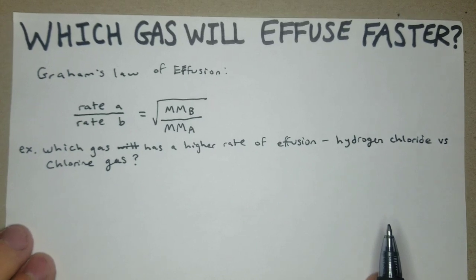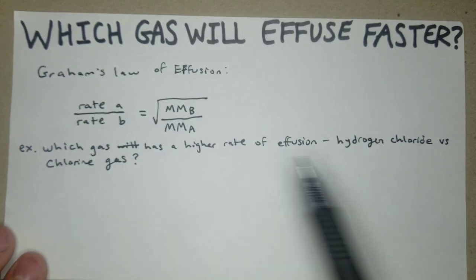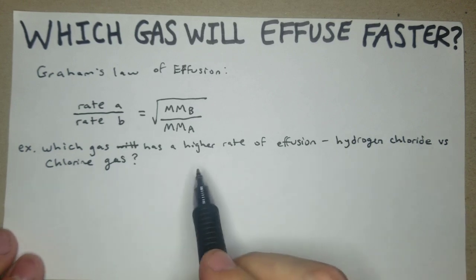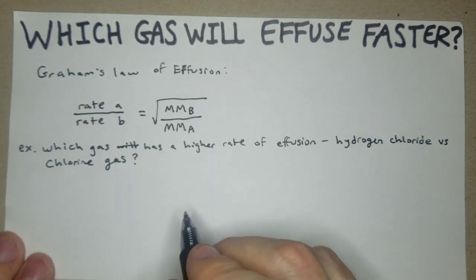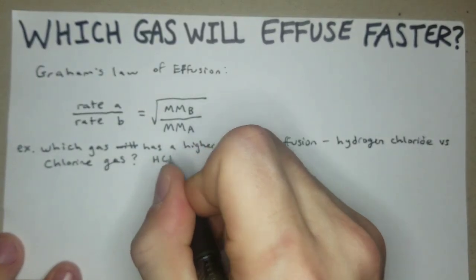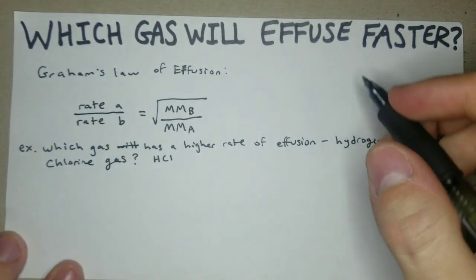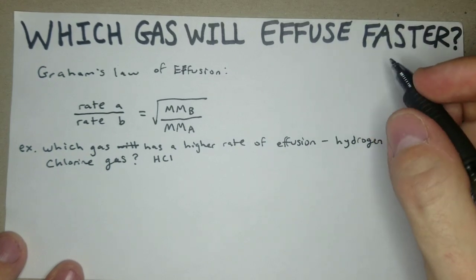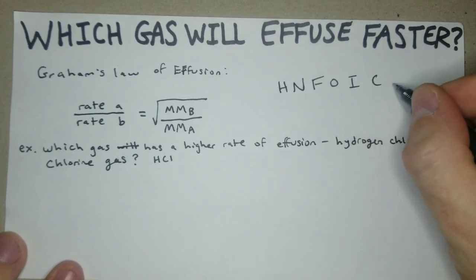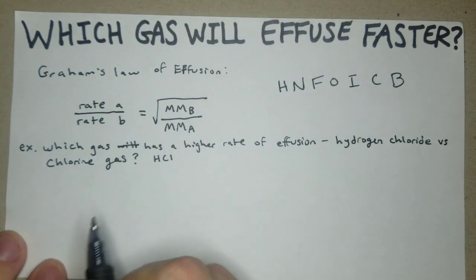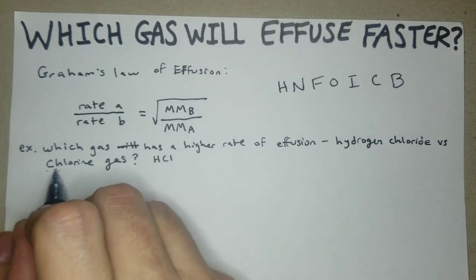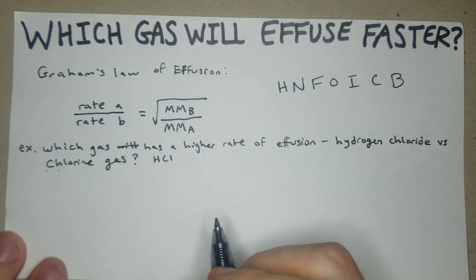I think once you get the hang of these, the trickiest part is translating the name of the compound into what it actually is in terms of the number of elements. For hydrogen chloride we have HCl, and then chlorine gas, don't forget your mnemonic for diatomics: have no fear of ice cold beer.